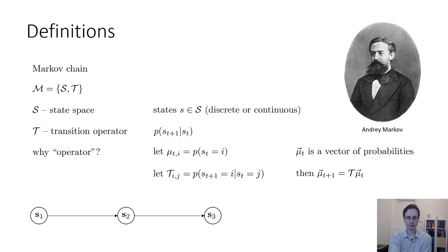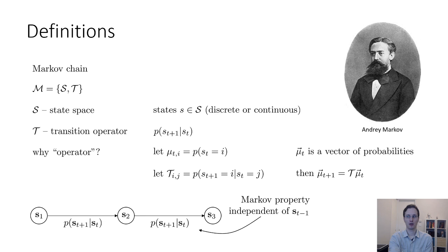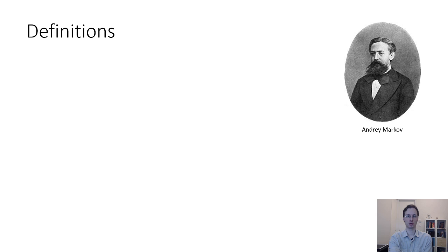Here's the graphical model corresponding to the Markov chain, with the edge denoting the transition probabilities. The states in the Markov chain satisfy the Markov property, which means that the state at time t+1 is conditionally independent of the state at time t-1 given the state at time t. The Markov chain by itself doesn't allow us to specify a decision-making problem because there's no notion of actions.